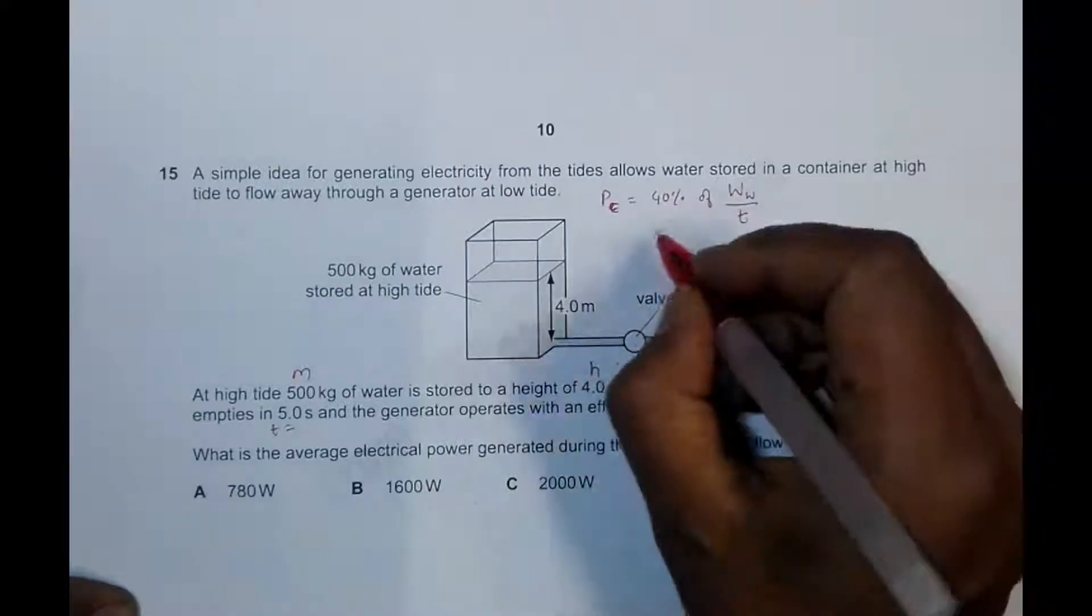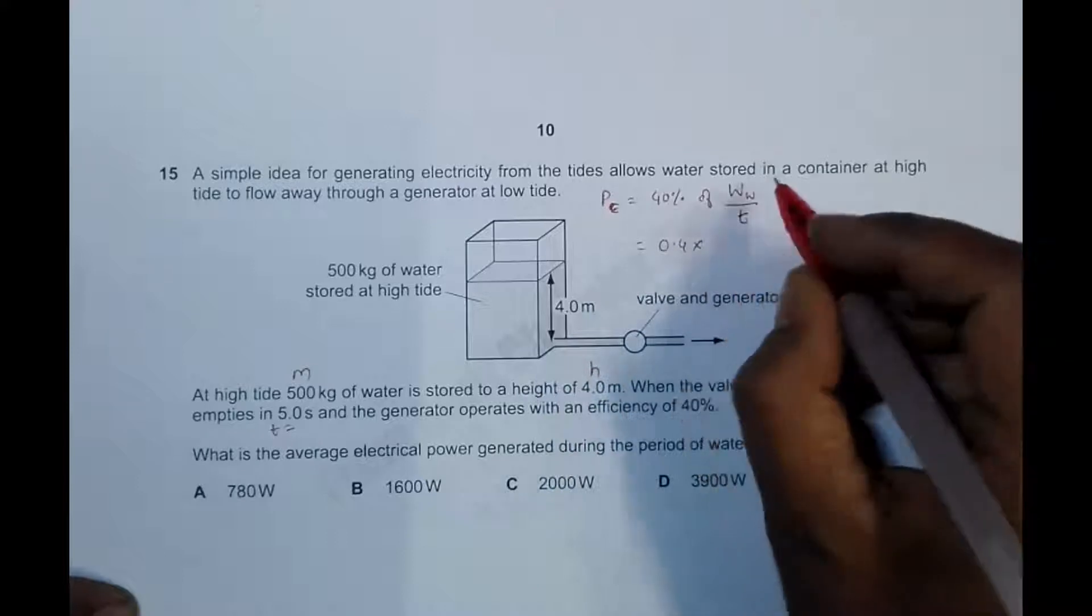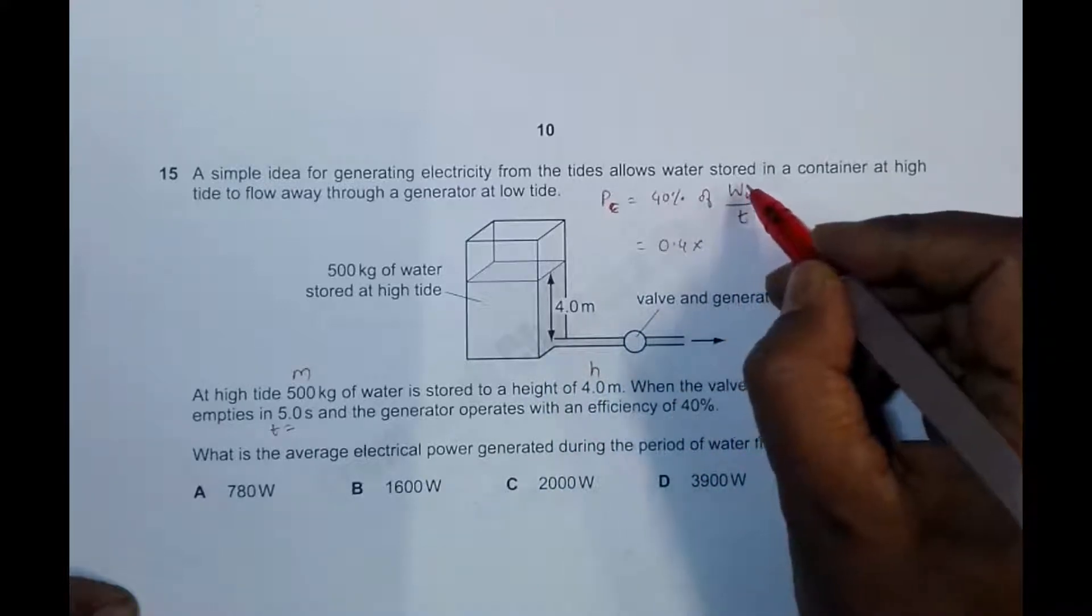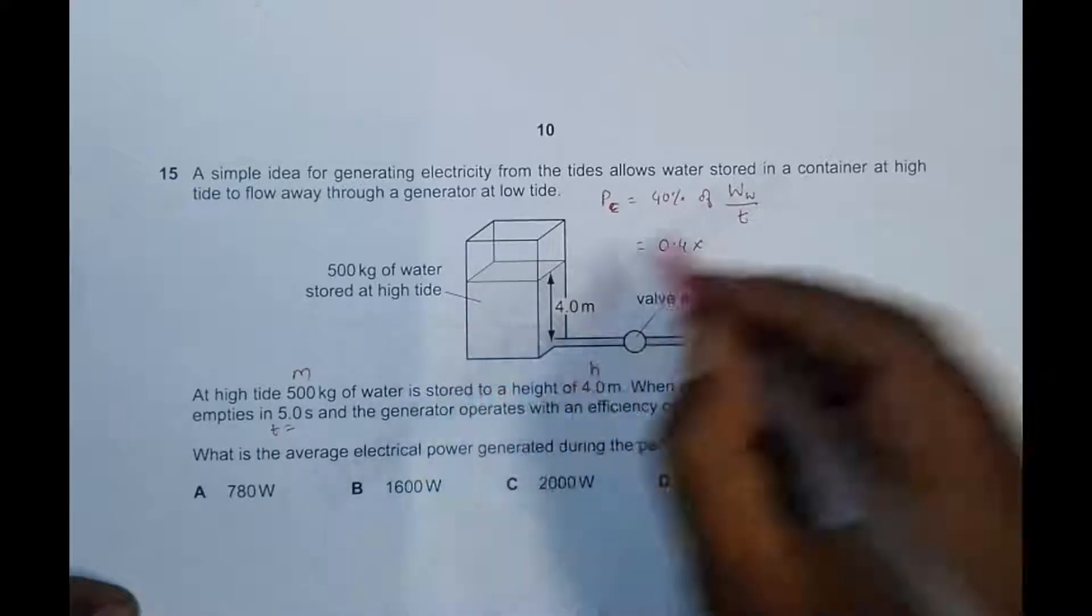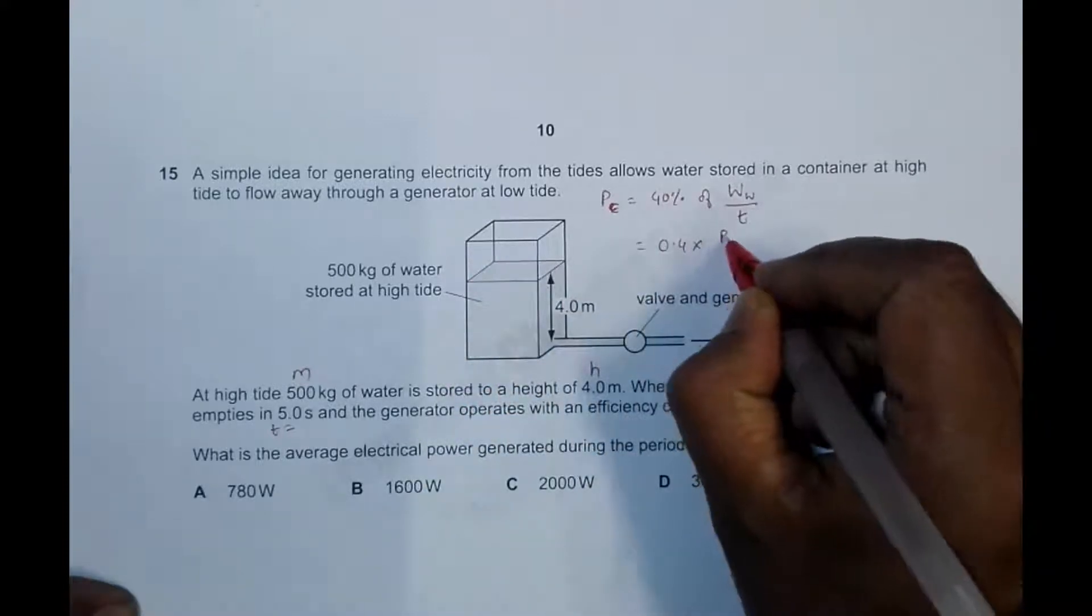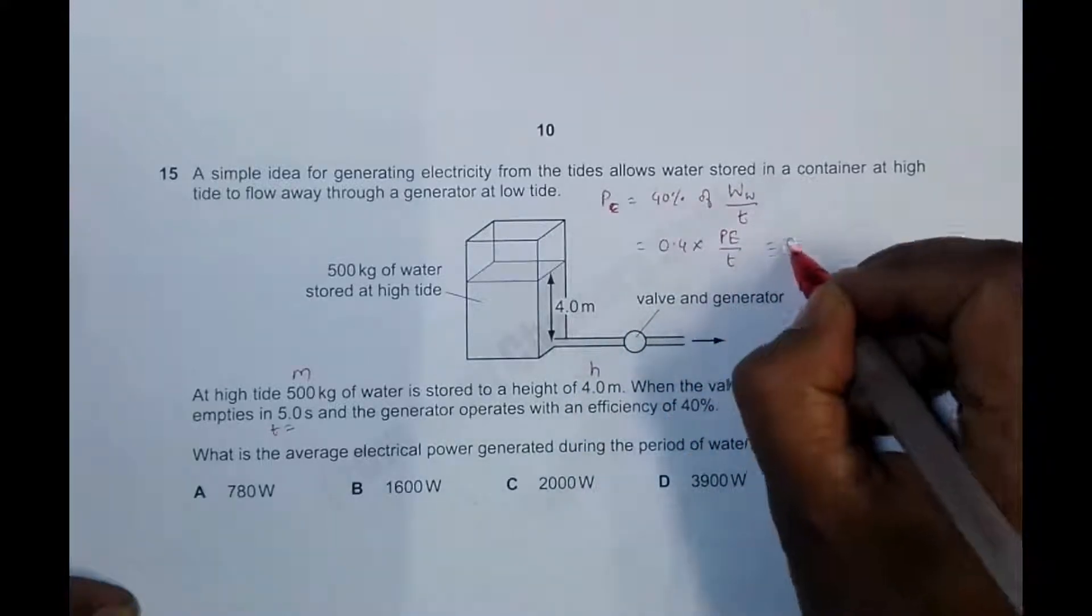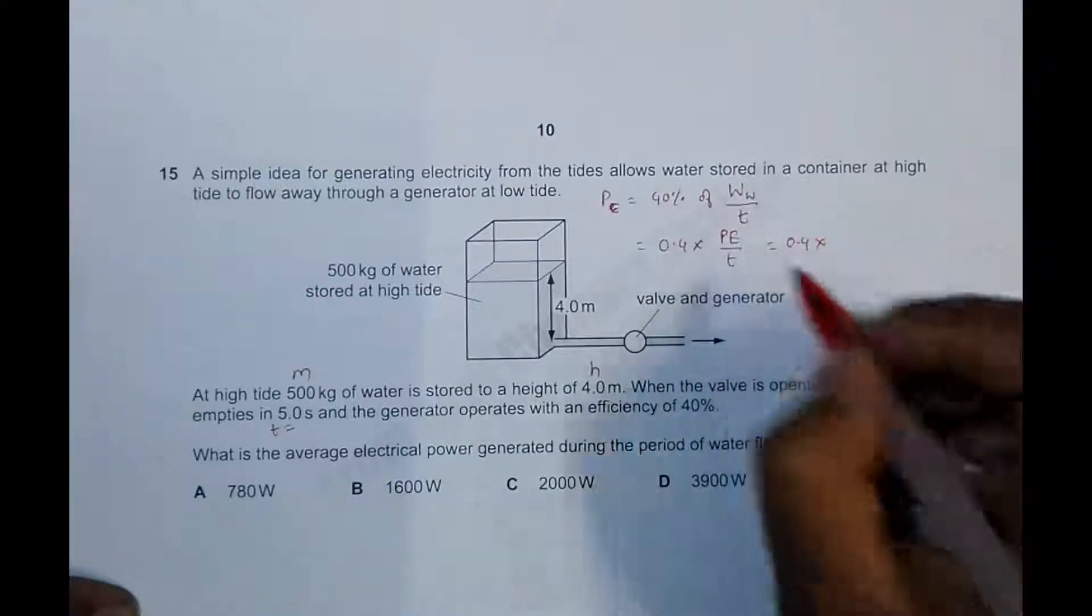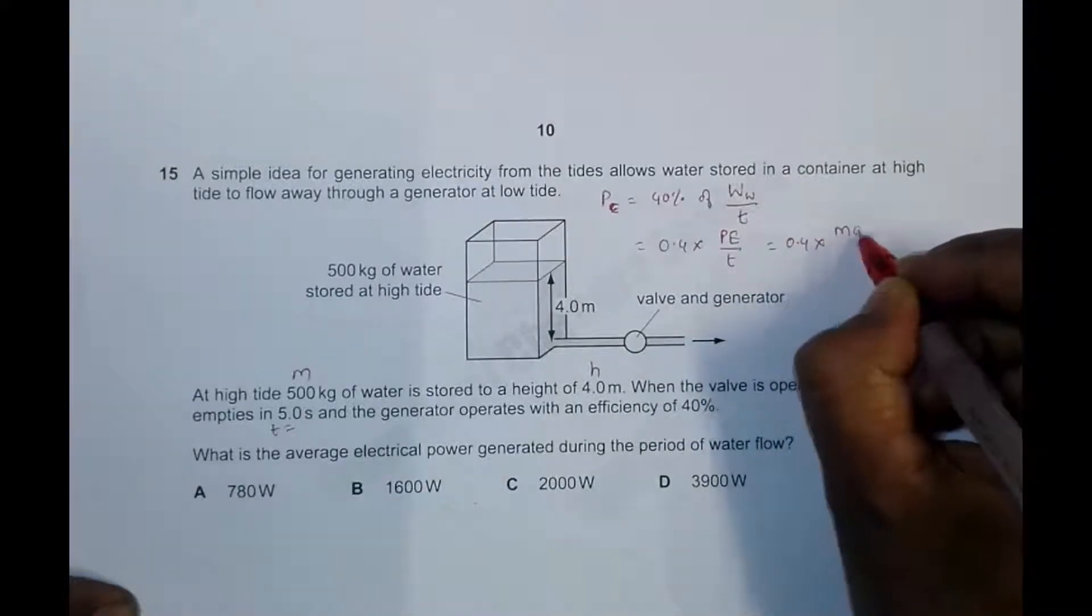That's equal to 0.4 times the work that the water does, which is equal to the amount of potential energy it can store. So it's potential energy of water divided by time. That's equal to 0.4 times PE of water, which equals mass of water times g times h.